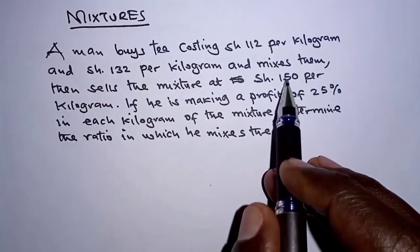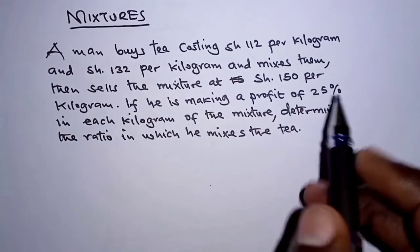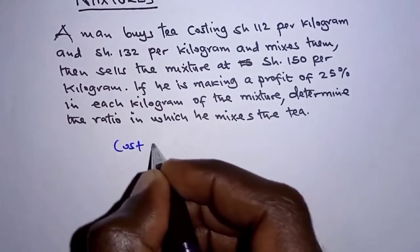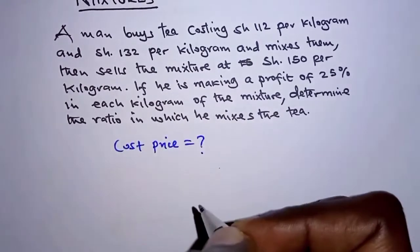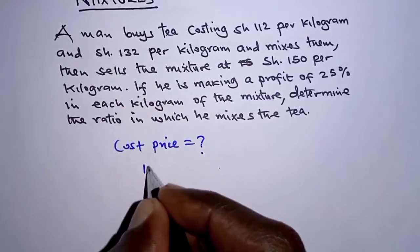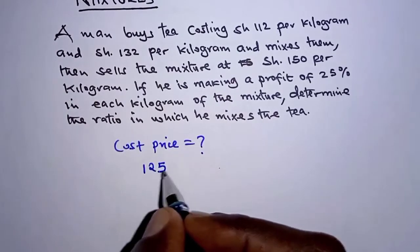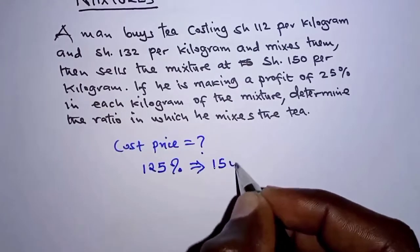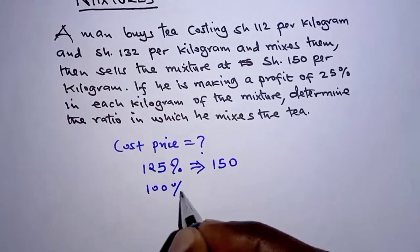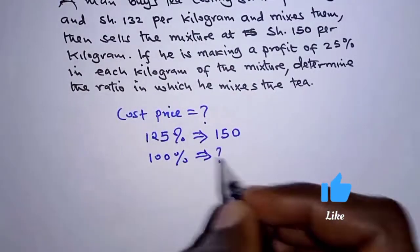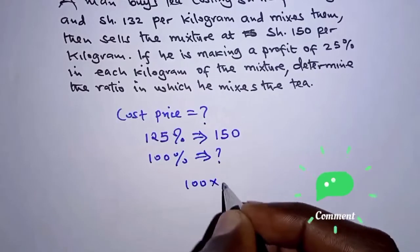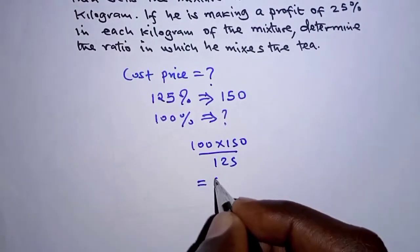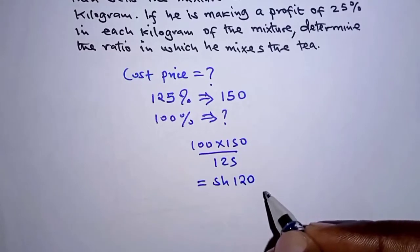We are told that he sells the mixture at 150 shillings to make a profit of 25 percent, so we need to find the cost price. The cost price is set at 100 percent. Since 125 percent equals 150 shillings, the cost price is 100 times 150 over 125, which gives 120 shillings.